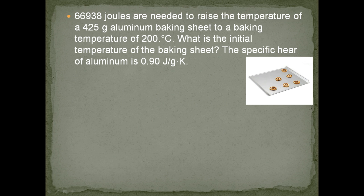This time we're heating a cookie sheet in the oven. We know our q is 66,938 joules, our mass is 425 grams, and our C is given at the end—the specific heat of aluminum is 0.90 joules per gram K. We notice that our specific heat is in joules and the q we're given is in joules, so we're good there.